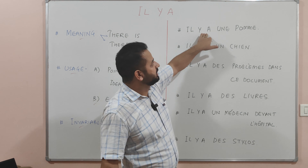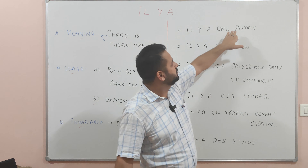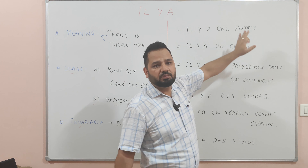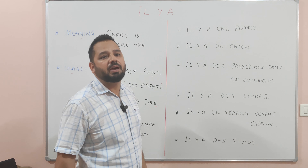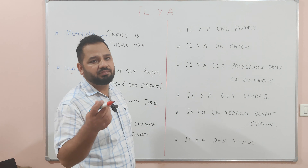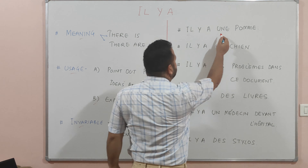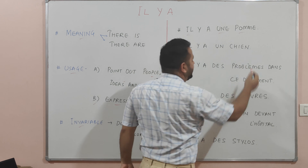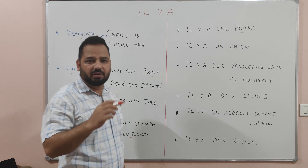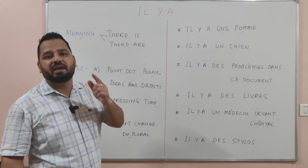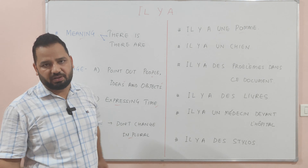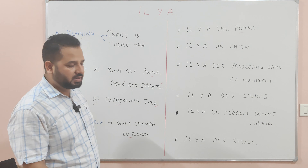'Il y a une pomme' — 'pomme' is apple, which is feminine. There is one apple, or there is an apple.